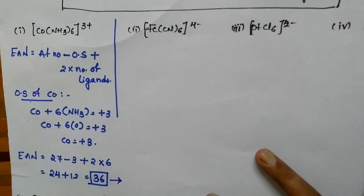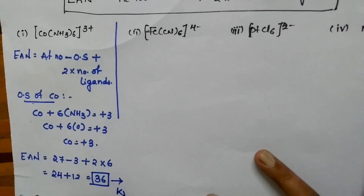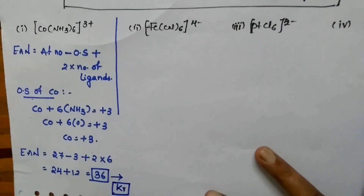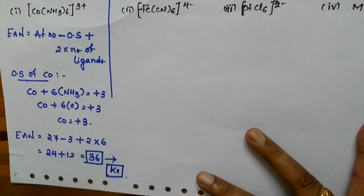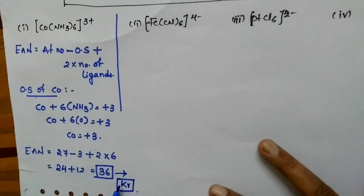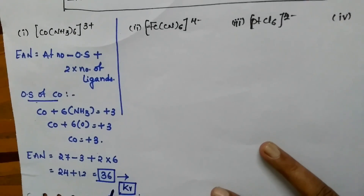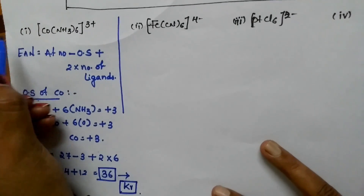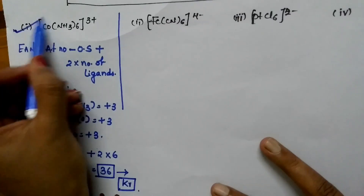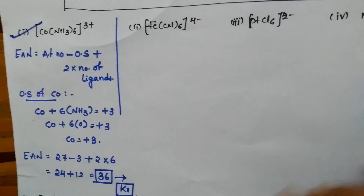36 is the atomic number of krypton, which is a noble gas element. So the EAN equals the nearest noble gas atomic number. That is why Co(NH3)6³⁺ is most stable.